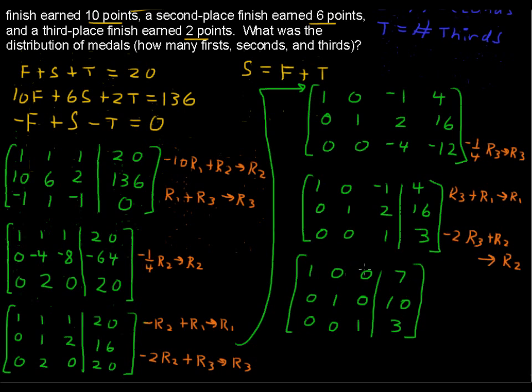Look at that. We ended up with f equals 7, s equals 10, and t equals 3. So we had 7 first place finishes, we had 10 second place finishes, and we had 3 third place finishes. There is our final answer. We used the matrix to solve that system of equations and that word problem.